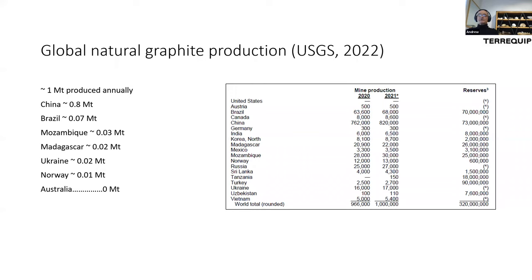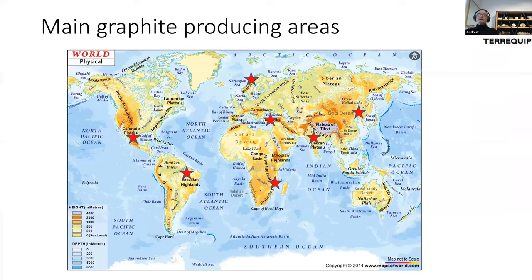Australia has no production that I'm aware of. The main producing areas are shown with red stars — China being the leading one, Mozambique and the east coast of Africa, and Brazil. In the Americas, the USA produces nothing; Canada produces a bit; there's Mexico. Coming over into Europe: Turkey, Ukraine, and Norway right up in the Arctic Circle, where there's an underground mine.